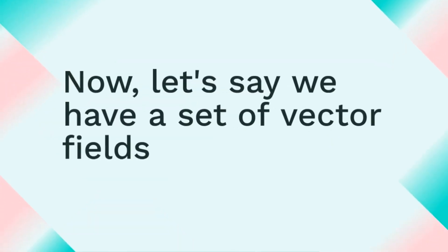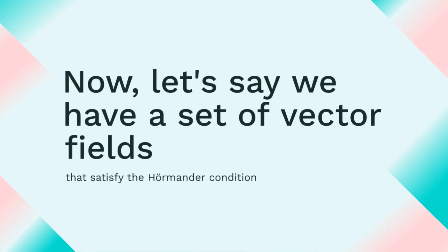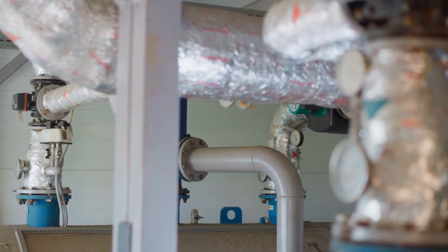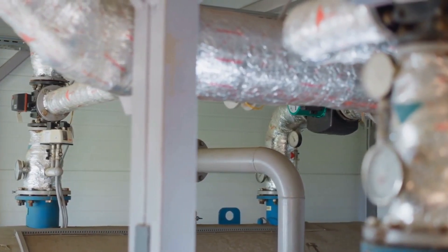Now let's say we have a set of vector fields V1, V2, V3 that satisfy the Hermander condition. These vector fields could represent various properties like heat diffusion, convection, and radiation in our example.